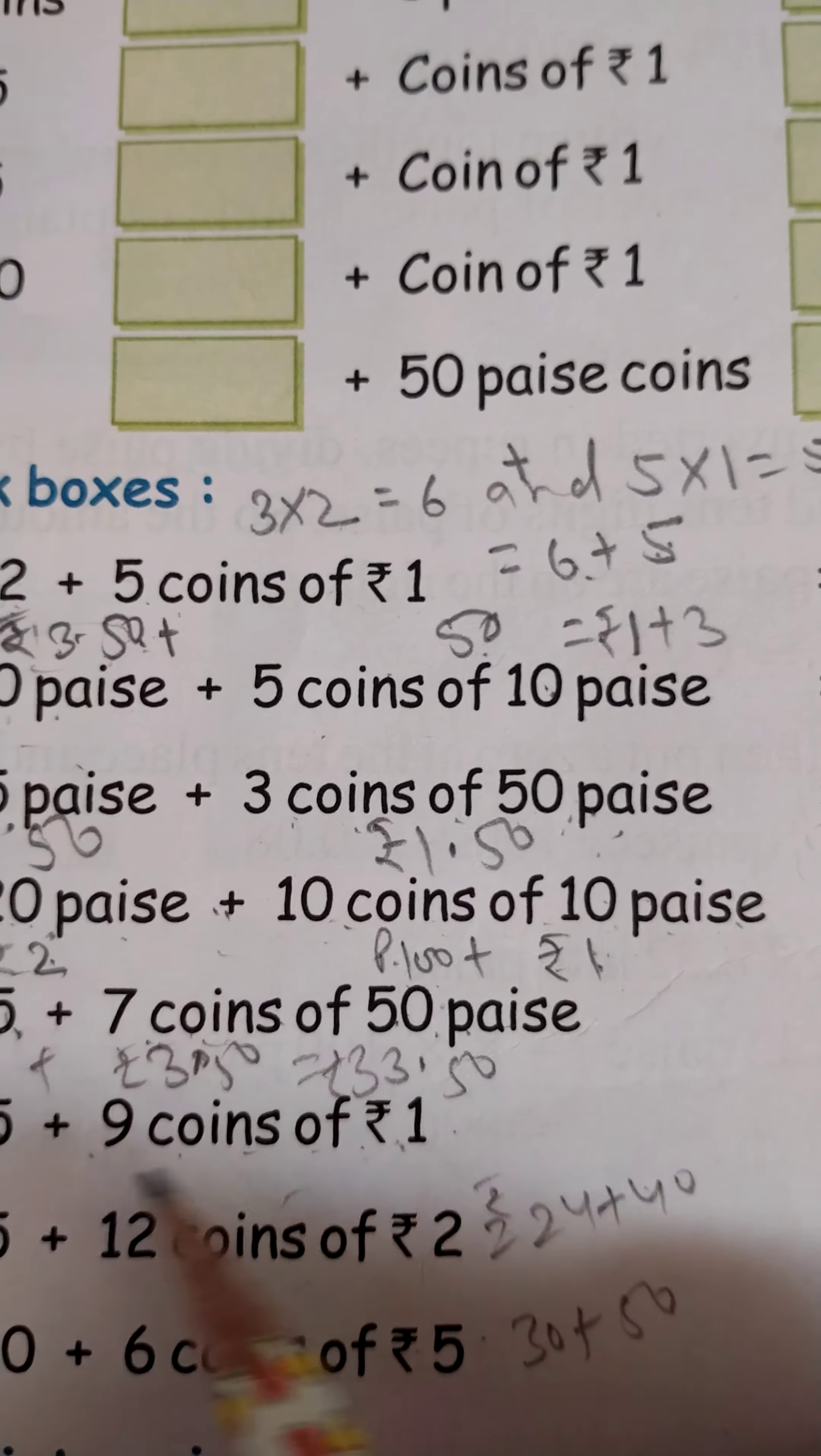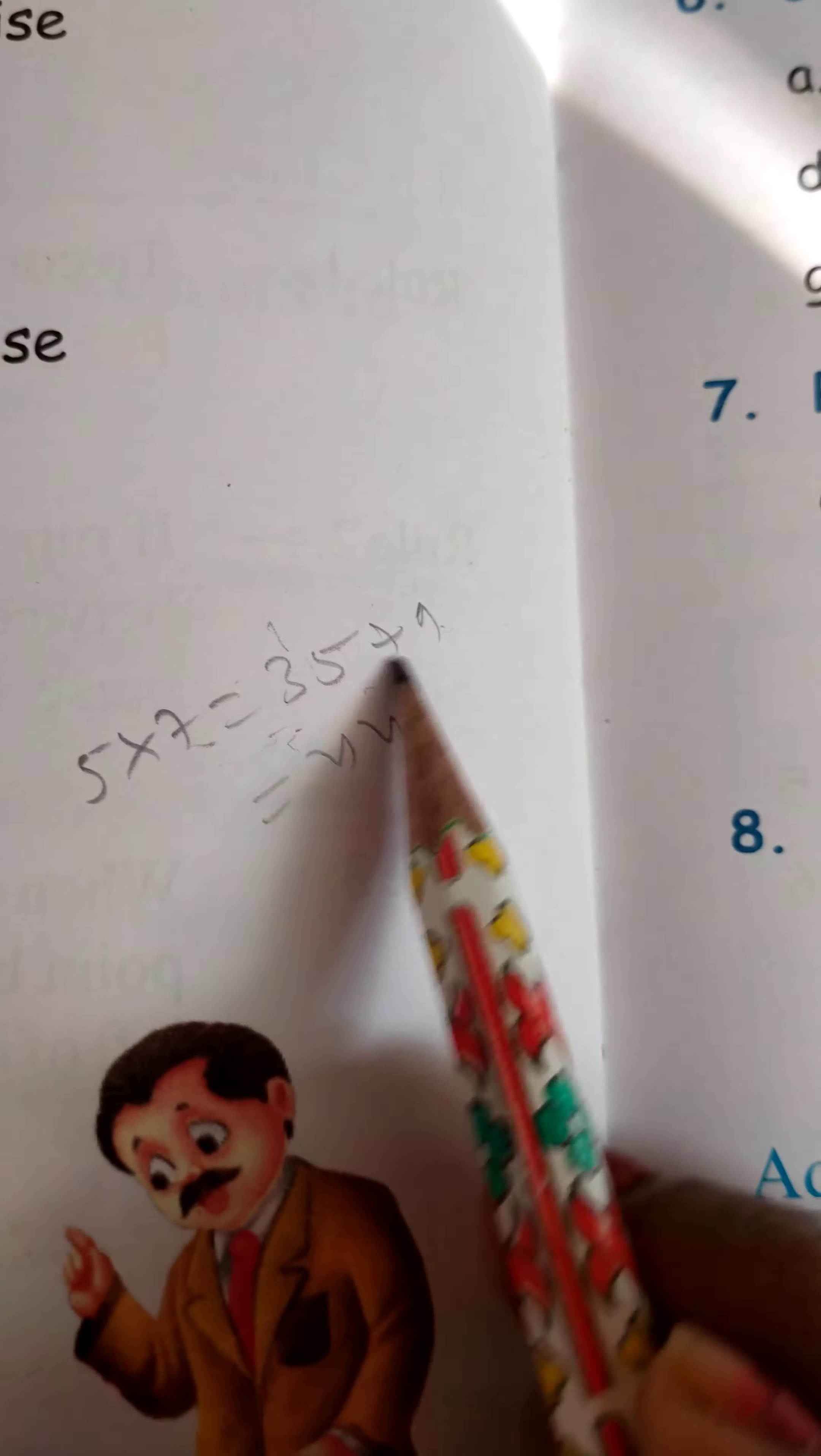That is 9 coins of 1 rupee, which is 9 rupees. So 9 rupees plus 35 rupees equals answer 44. Here I have written rupees 44.